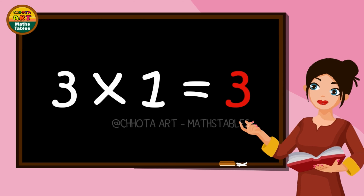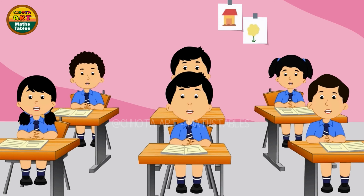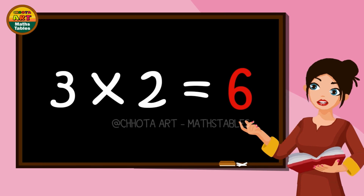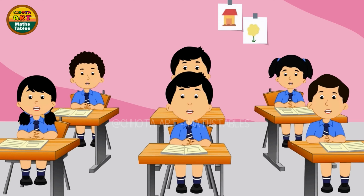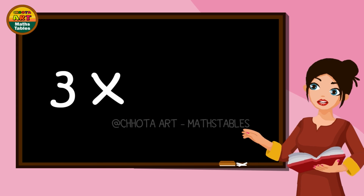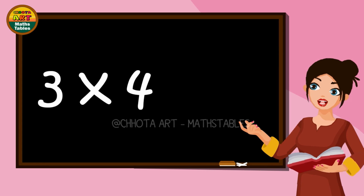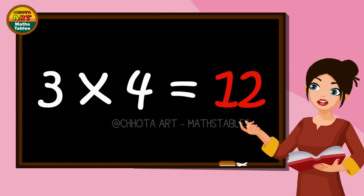Three ones are three. Three twos are six. Three threes are nine. Three fours are twelve.